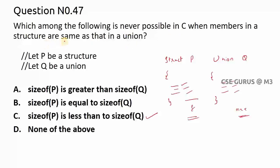So that is a thing. That's why this is never possible. So that is only is asking never possible in C with respect to structure and union. So it may be greater than, it may be equal, but size of the P is never less than size of the Q. That is size of the structure is never less than size of the union. So the answer is C.